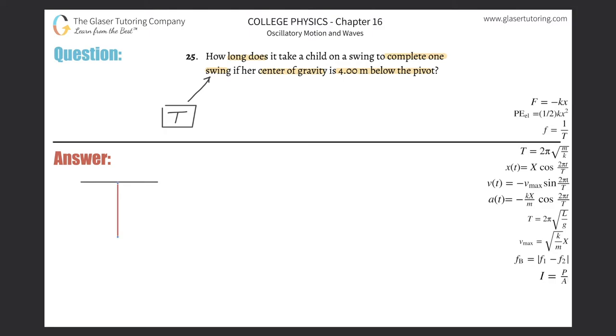Now pendulums do this—they swing back and forth. What they tell us is that the center of gravity of this child is going to be four meters below the pivot point.